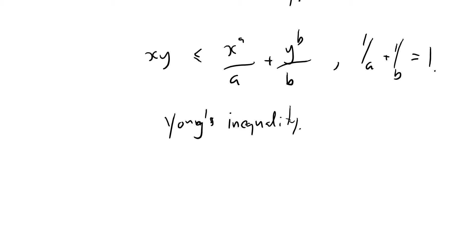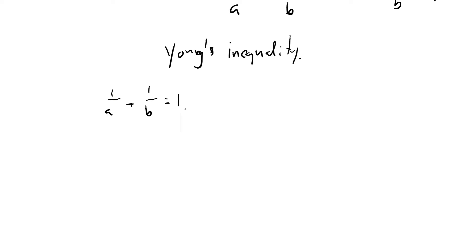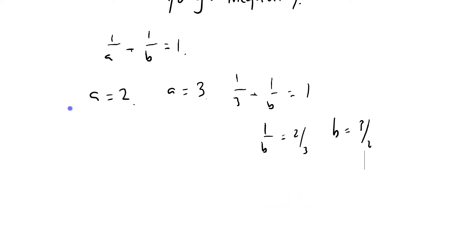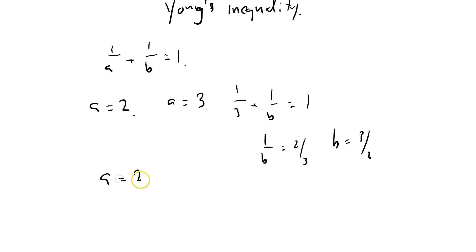Let's just play around with it. We've got 1/A + 1/B = 1. If I make A = 2, then B = 2 as well. How about A = 3? So we've got 1/3 + 1/B = 1, meaning 1/B = 2/3, so B = 3/2. So A = 3 and B = 3/2.